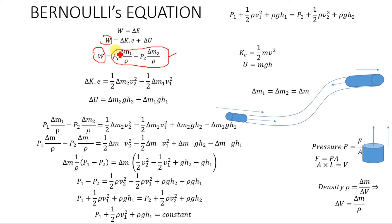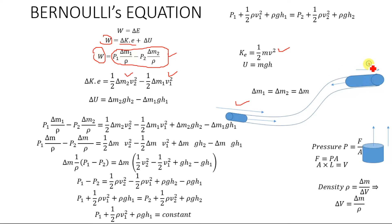The kinetic energy is KE equals one-half mv². The change in kinetic energy is ΔKE equals one-half·Δm2·v2² minus one-half·Δm1·v1², representing final kinetic energy minus initial kinetic energy at the two ends of the pipe.